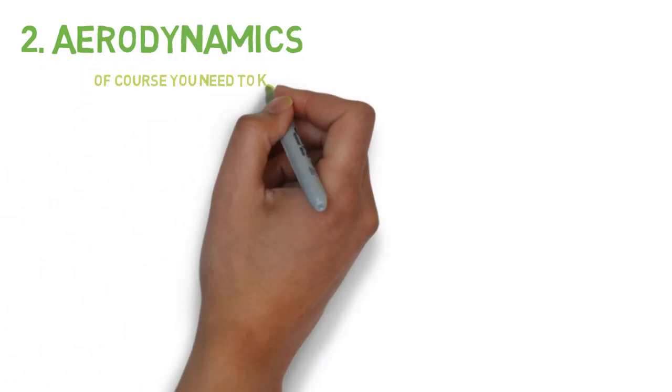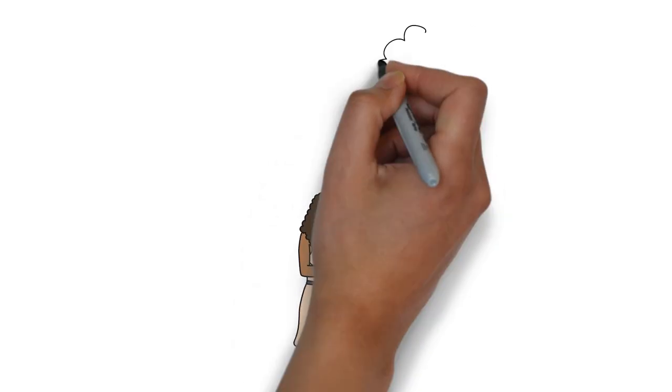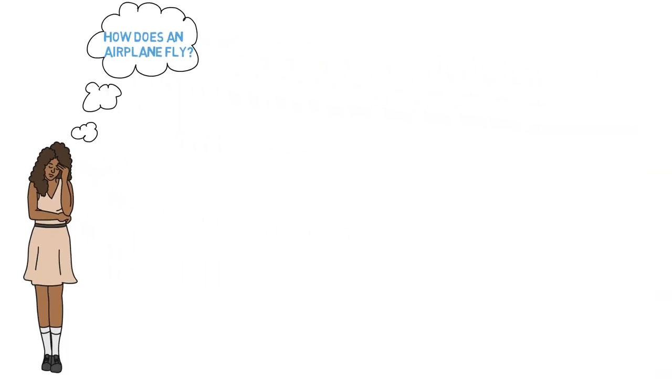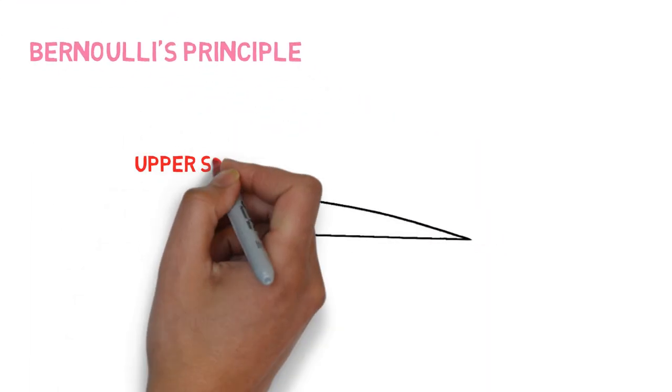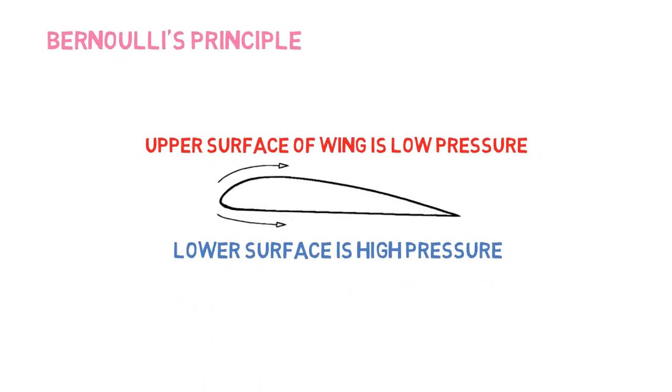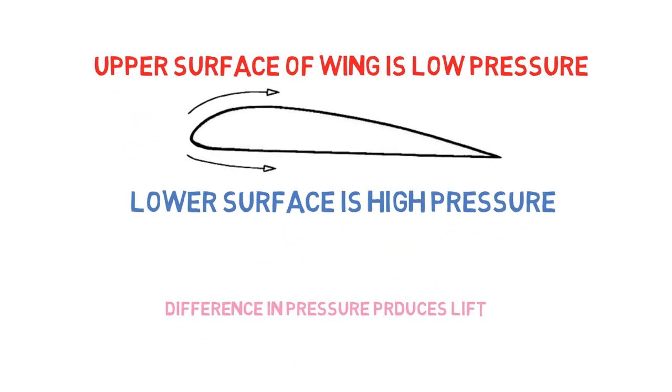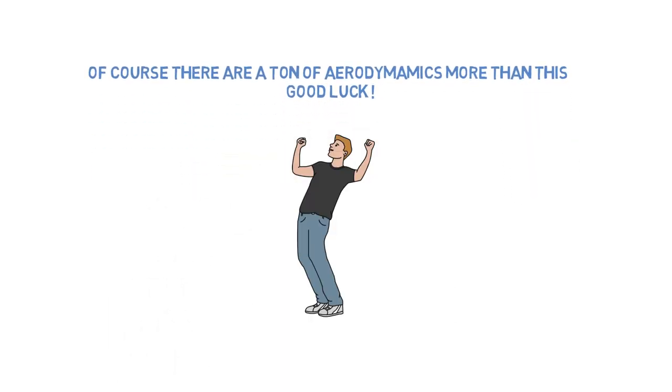Second is aerodynamics. Of course you need to know about this. You're going to think how does an airplane fly. Based on Bernoulli's principle, the upper surface of the wing is low pressure and lower surface is high pressure. The air underneath will produce lift due to pressure difference because high pressure always wants to go to low pressure. Of course there are a ton of other aerodynamics more than this. Good luck.